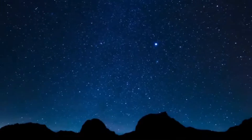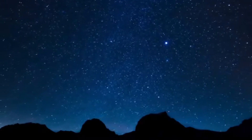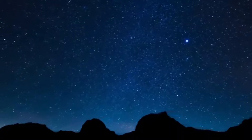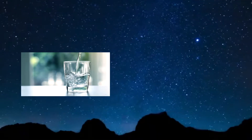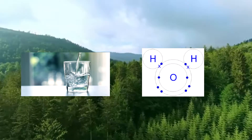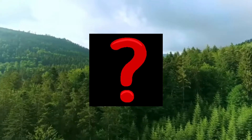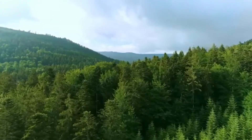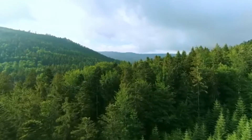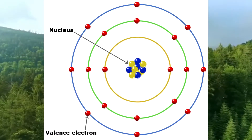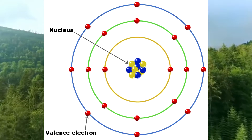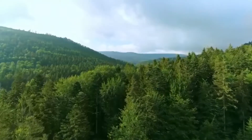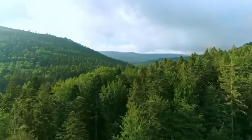Nearly all the substances in our world are held together by chemical bonds. For example, water is held together by a chemical bond. A chemical bond is a mutual electrical attraction between the nuclei and the valence electrons of different atoms that binds the atoms together.